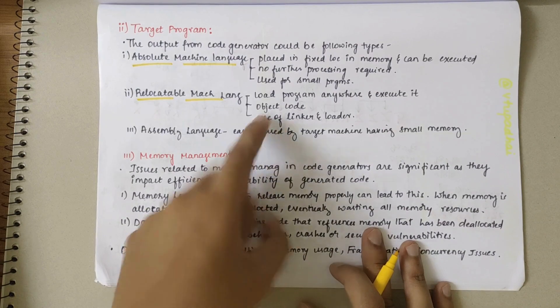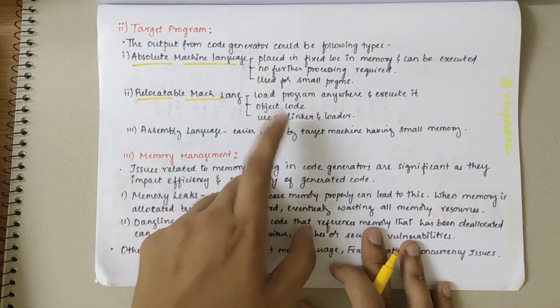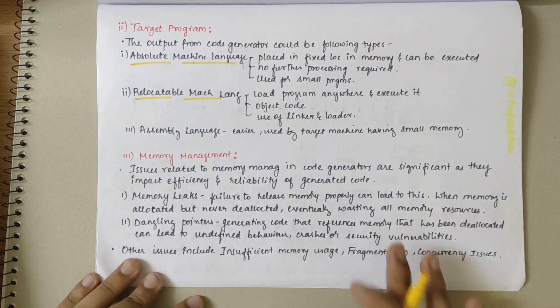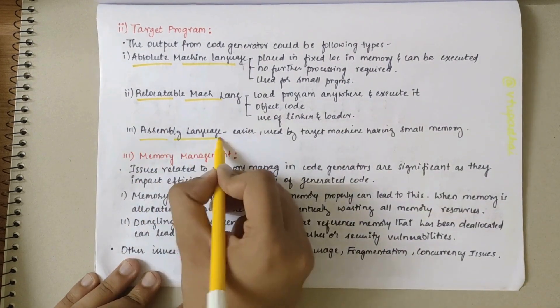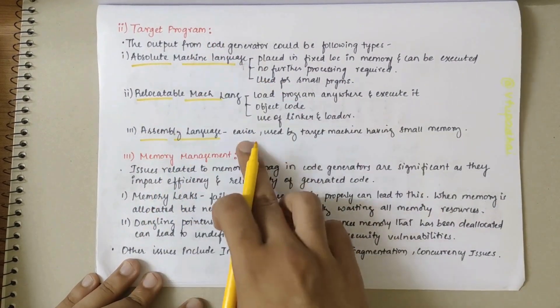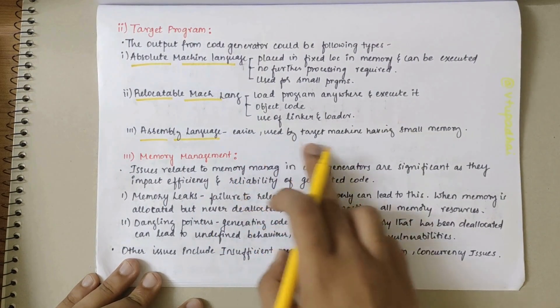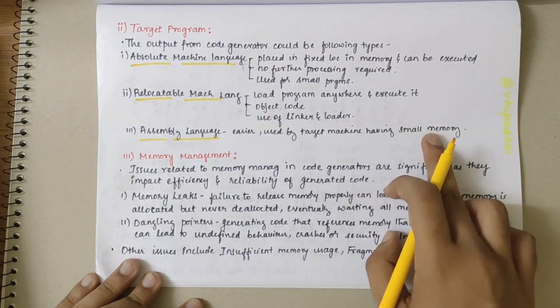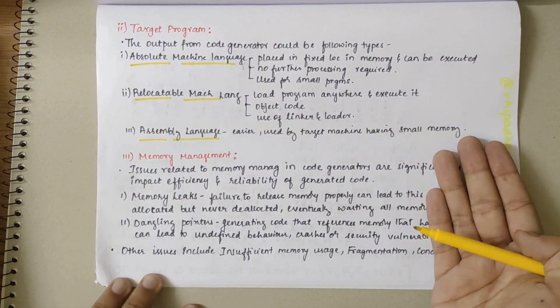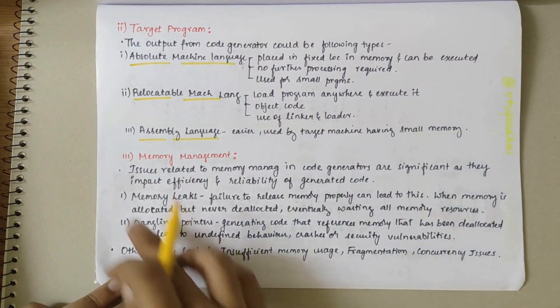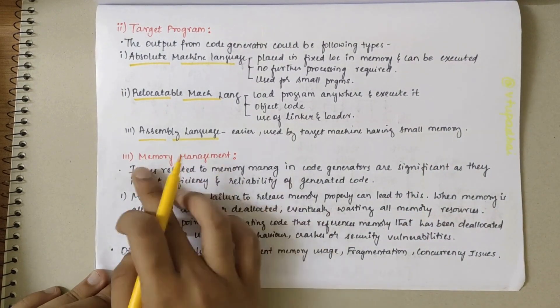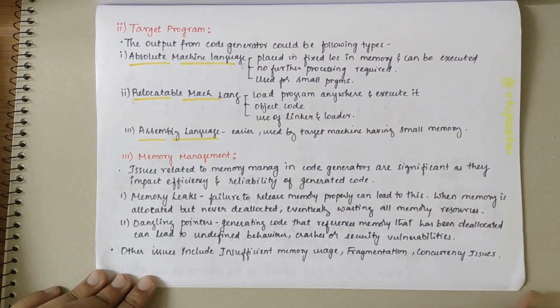Then we have assembly level language. Compared to these two, this is the easier one. It is used by target machine having small memory. Next, the third issue we have here is memory management.